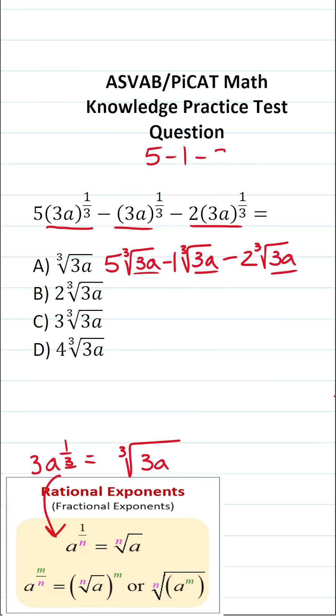5 minus 1 minus 2. 5 minus 1 is 4. Minus 2 is 2. So this is the same thing as 2 cube root 3a.